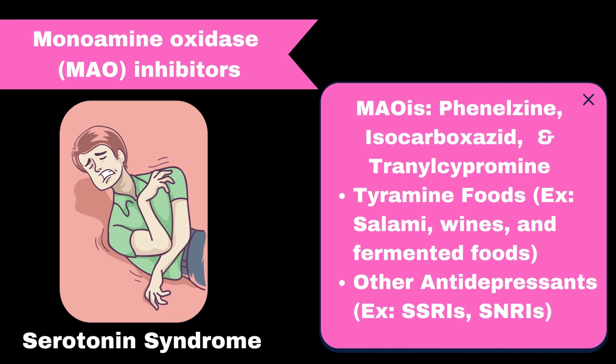Next, we have a major one: monoamine oxidase inhibitors. These are very old antidepressants, which were the first antidepressants to hit the market. These could lead to a condition called serotonin syndrome, which is when a patient has too much serotonin in their body. It will look like the patient has a loss of muscle coordination with confusion and lots of sweating. Due to this, we do not want to combine MAOIs with tyramine-rich foods like salami, wine, and fermented foods, or other antidepressants such as SSRIs and SNRIs.